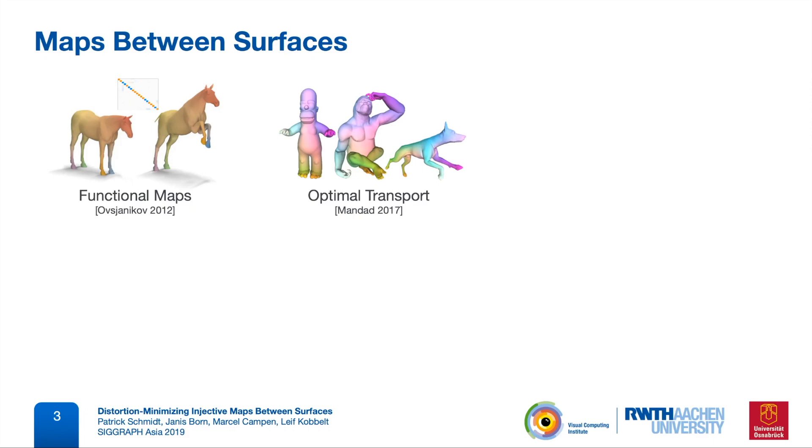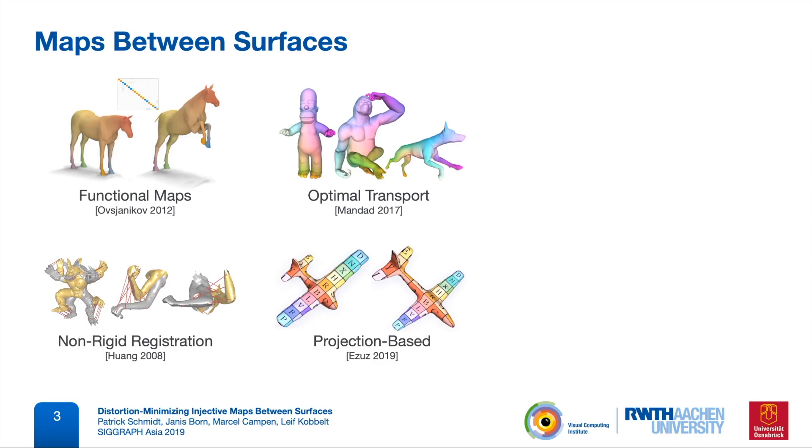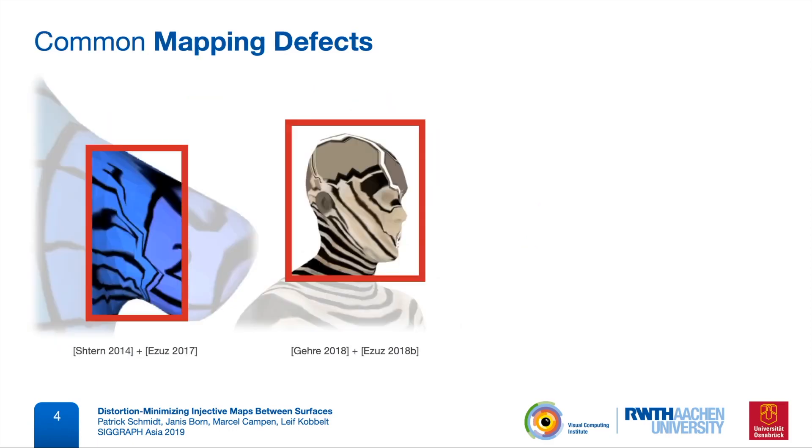Other classes of methods are non-rigid registration or recent projection based methods. They do define vertex-to-point maps, but properties like continuity or injectivity of the map are only promoted in a soft manner and cannot be guaranteed. The common defects that can occur without these guarantees are discontinuous jumps or fold-overs in the map, leading for example to tearing artifacts and texture transfer.